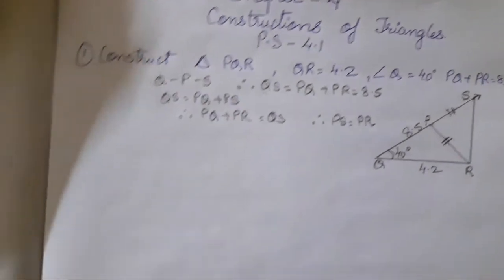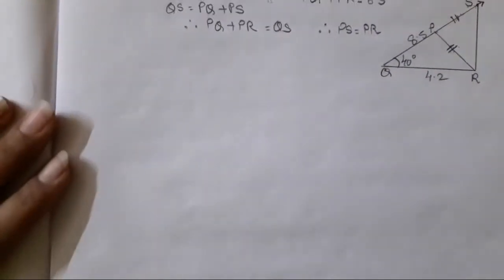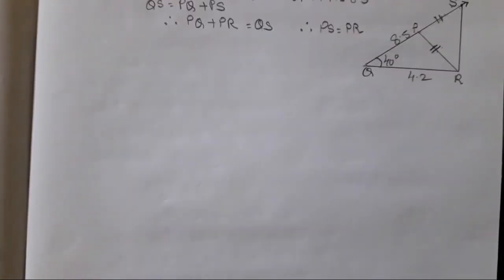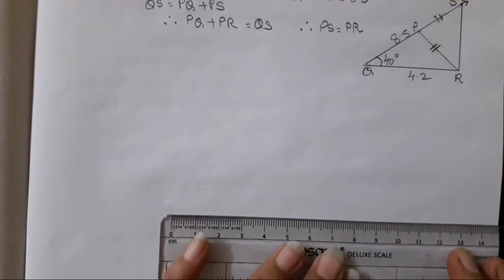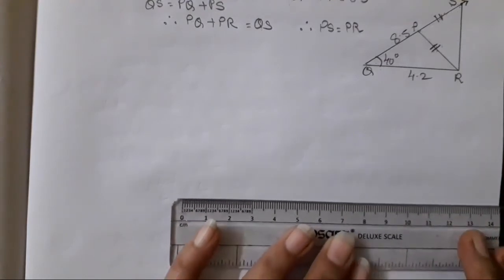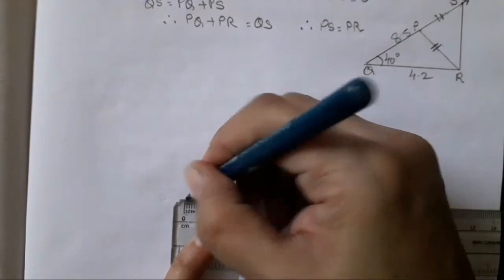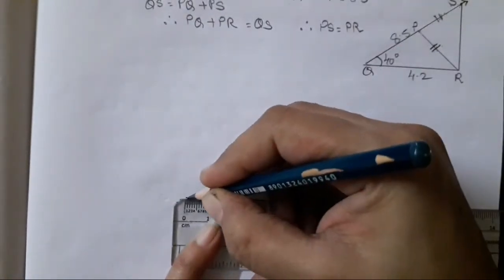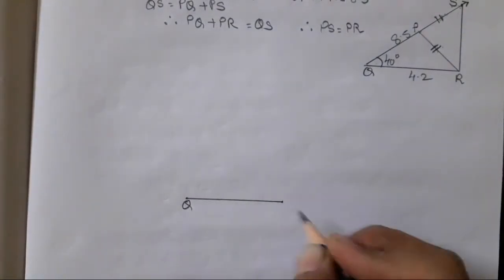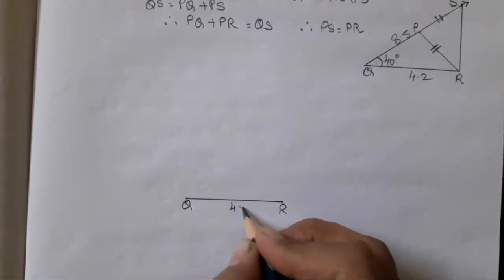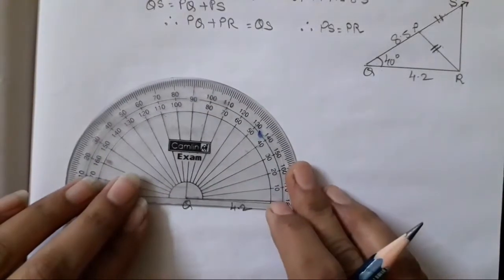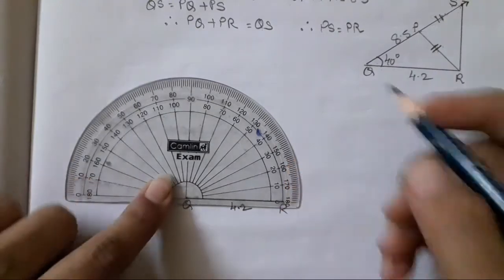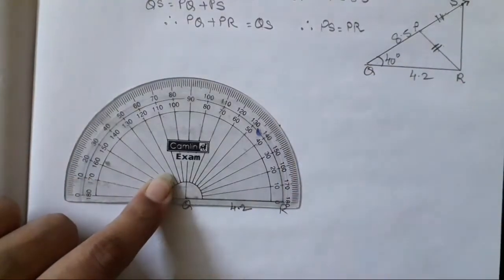Now let's start with the construction. Construction is very easy — it's the same as we did last year. First we will construct 4.2 centimeter, our base. Let's draw 4.2 centimeter: 4 and 4.2. Name it as Q and R, 4.2. After that, we will mark our angle, which is supposed to be 40 degrees. So this is 40 degrees.